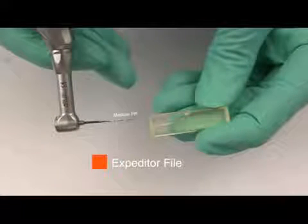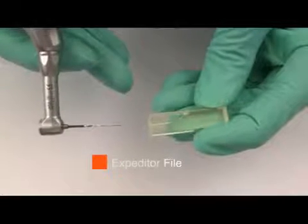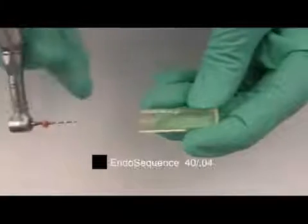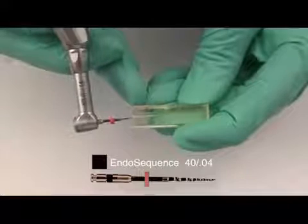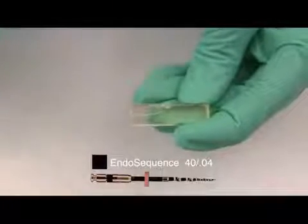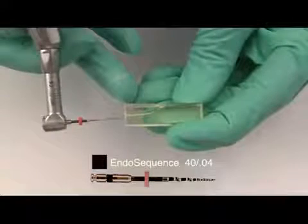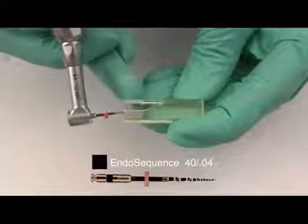Moving into a medium procedure pack with a crown down motion, we have a size 40-04 and the progression is one back, two back, three back, very gentle strokes. The EndoSequence file is very efficient. You do two passes of three engagements.